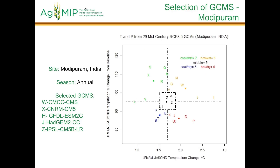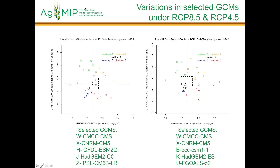This is for Modipuram as well as for Karnal. This is for Modipuram, RCP 8.5 and RCP 4.5. You see almost except three - two GCMs are common in RCP 8.5 as well as RCP 4.5, but we got three different GCMs in RCP 8.5 as well as RCP 4.5.